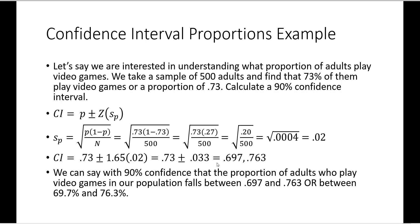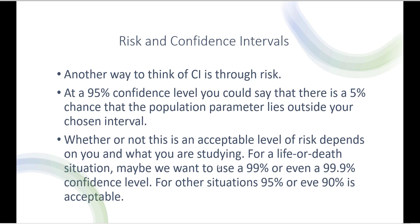Another way of thinking about confidence intervals is through risk. At a 95% confidence level, there is a 5% chance that the population parameter lies outside our chosen interval — a 5% chance that we are wrong. Whether or not this is an acceptable level of risk depends on what you're studying. For example, in a life or death situation — studying a drug interaction — you may want to use a higher confidence level like 99% or even 99.9%. For other situations, 95% or even 90% is acceptable.